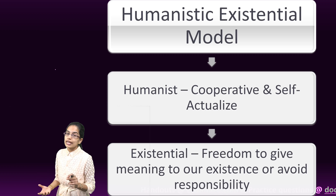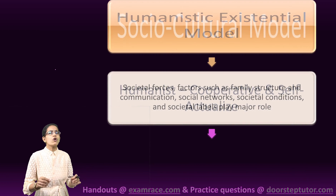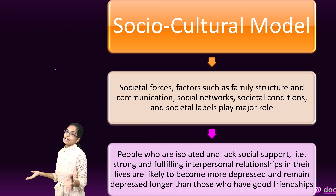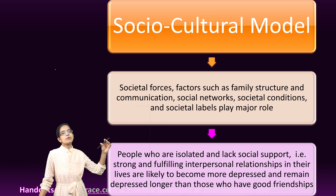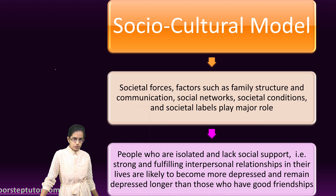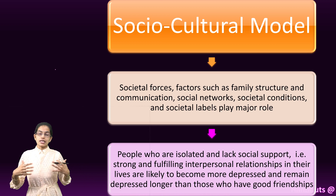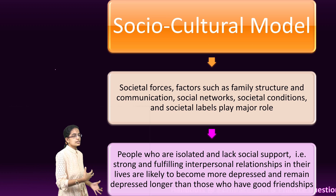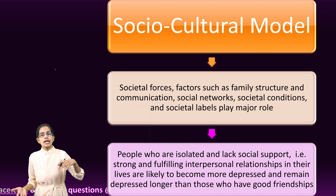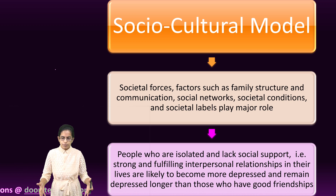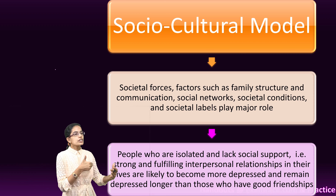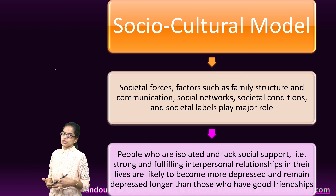The sociocultural model emphasizes that society — family, peer groups, social networks, social labels — plays an important role in psychological disorders. Scientific study shows that people who are isolated, without good social support or interpersonal relationships, are highly likely to become more depressed and aloof later in life. Good friendships and friendly relations are essential to reduce anxiety and depression.